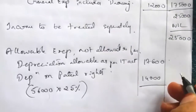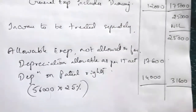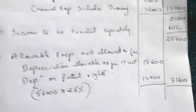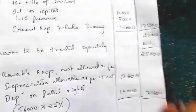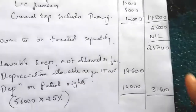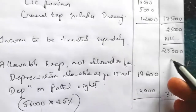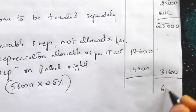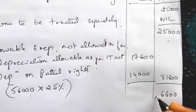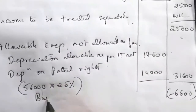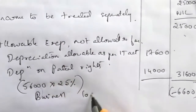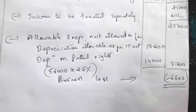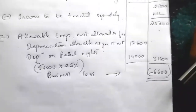So the balance: 25,000 minus 31,600 = negative 6,600, which is a business loss. In this illustration we have got a business loss. There is no information relating to any other head, and the question asks to compute only the business income.